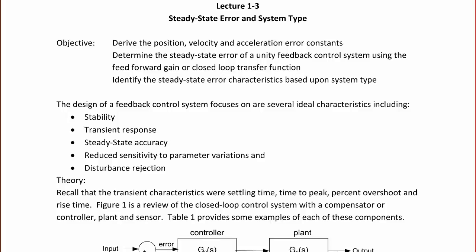Recall that the design of a feedback control system focuses on several ideal characteristics that you may want to use tradeoffs to determine which ones are ideal for your system. Some of these characteristics are stability, transient response, steady-state accuracy, reduced sensitivity to parameter variations, and disturbance rejection.